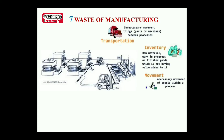Next is motion - unnecessary movement of people within a process. This is not proper utilization of laborers or manpower during the manufacturing system and is considered a waste of time. Unnecessary motion of people - whether engineers, top management, laborers, or helpers - is one of the seven wastes.